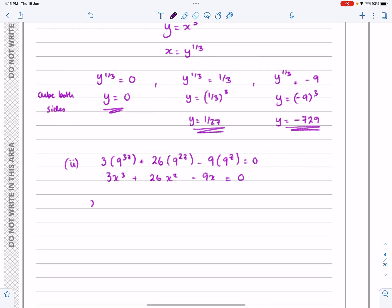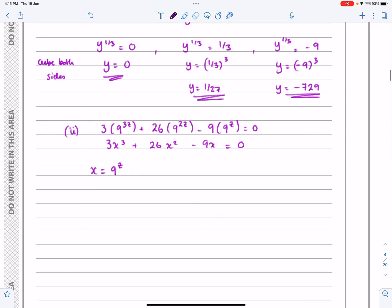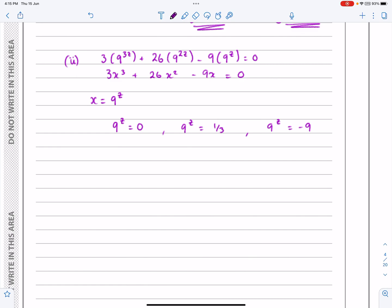And then we can pretty much follow the same thing we've just done for the last one. If x is going to be equal to 9^z, then I'm going to get 9^z equals 0, or 9^z equals a third, or 9^z equals minus 9. So when we're looking at these then, for the first one, if 9^z equals 0, think about what you know about the graph y equals e^x. Or think about what you know about powers. a^x looks like this. It never comes below the axis and it has an asymptote at 0. So when we're looking at this one here, this one is going to give me no solutions.